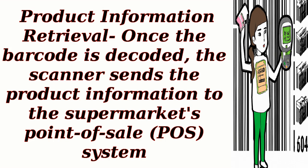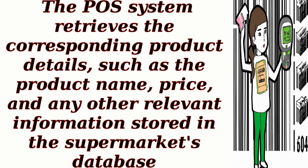Product information retrieval: once the barcode is decoded, the scanner sends the product information to the supermarket's point-of-sale (POS) system. The POS system retrieves the corresponding product details, such as the product name, price, and any other relevant information stored in the supermarket's database.